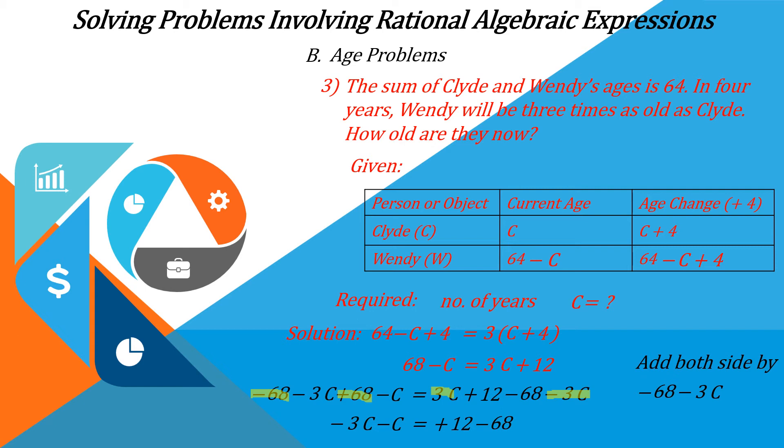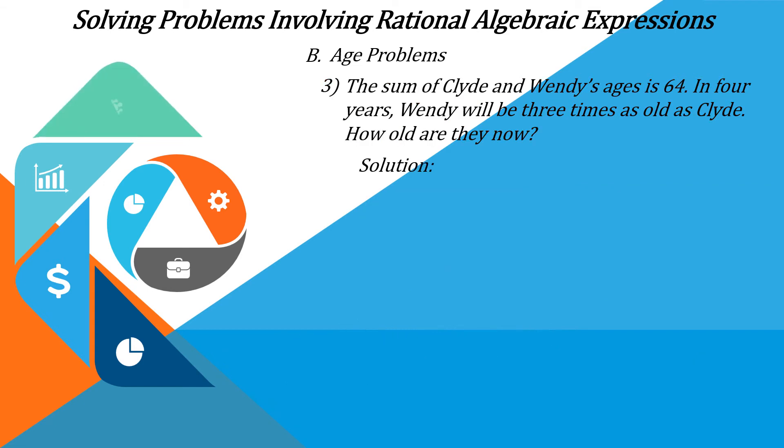Simplifying further, negative 3C minus C equals positive 12 minus 68. And we have negative 4C is equal to negative 56. Dividing both sides of the equation by negative 4, we have C is equal to 14 years old.